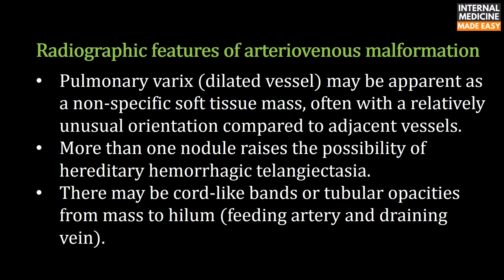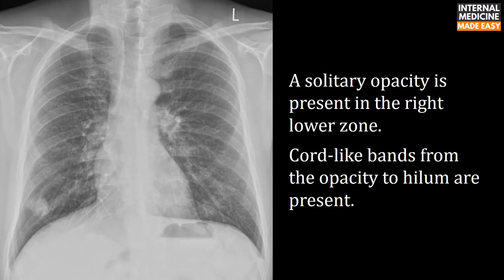Radiographic features of arteriovenous malformation: pulmonary varices or dilated vessels may appear as a non-specific soft tissue mass, often with a relatively unusual orientation compared to adjacent vessels. More than one nodule raises the possibility of hereditary hemorrhagic telangiectasia. There may be cord-like bands or tubular opacities from the mass to the hilum, representing the feeding artery and draining vein. In this X-ray, a solitary opacity in the right lower zone shows cord-like bands from the opacity to the hilum.